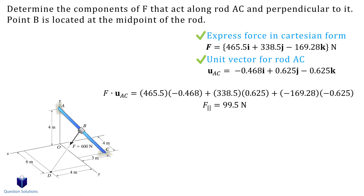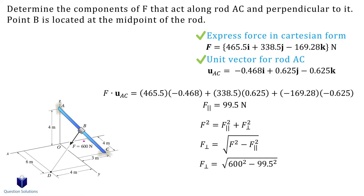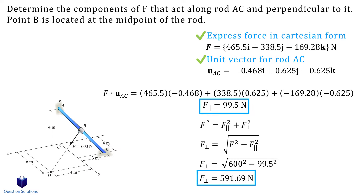Now we need the perpendicular component. For that, we use this equation. So F is the magnitude of our force, so it's 600 newtons. The parallel component is what we just found, so now we can solve for the perpendicular component. Those are our answers. That should cover the types of problems you will face when it comes to dot products and forces. Thanks for watching and best of luck with your studies.